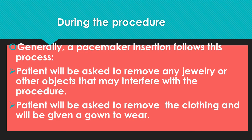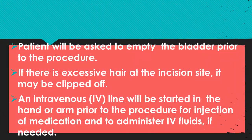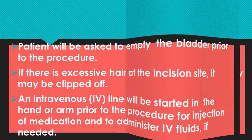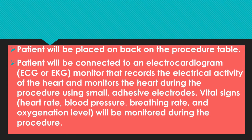During the procedure: the patient will be asked to remove any jewelry or other objects that may interfere with the procedure. All clothing will be removed and the patient will be changed into a hospital gown. The patient will be asked to empty the bladder prior to the procedure. If there is excessive hair on the incision site, it should be clipped or shaved. An intravenous line will be started in the hand prior to the procedure, and any pre-medication injections will be given.